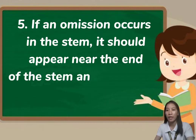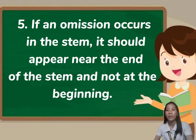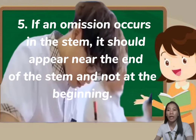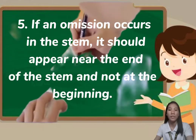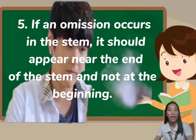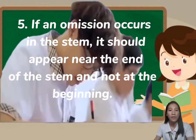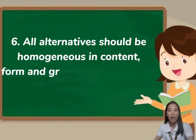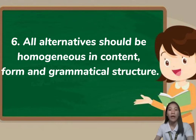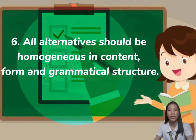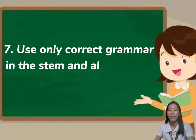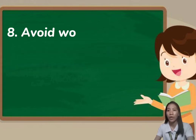During exams, some items have blanks that are very crucial to answer, so in making multiple choice items the blank should appear near the end of the stem to make it easier for students to answer quickly. All alternatives should be homogeneous in content, form, and grammatical structure as much as possible. Prepare choices that are clear and concise in content and grammatically correct to avoid distractions.